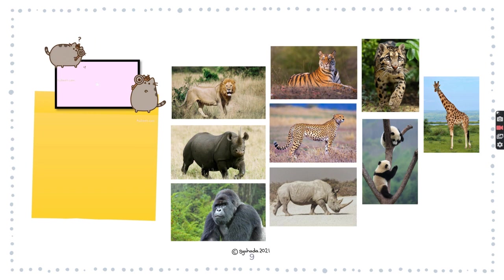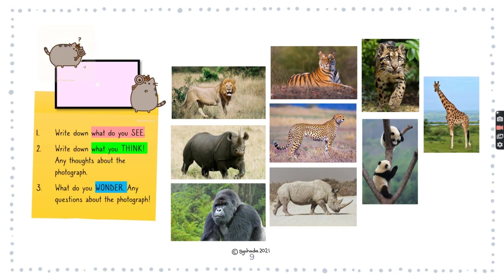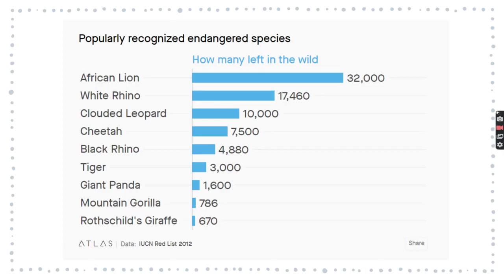These are just mainly pictures, and if you were in class I would ask you to do an activity called See, Think, and Wonder. I want you to have a look at these photos — what can you see? Write it down. What do you think about those photos? Are there any questions you have? It would be lovely for you to send me a message with what you can see, think, and wonder. All of these animals are popularly recognized endangered species.